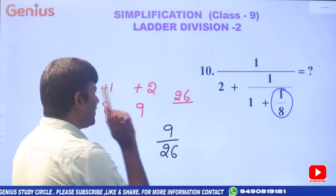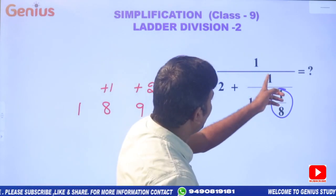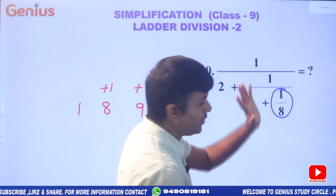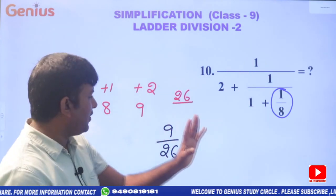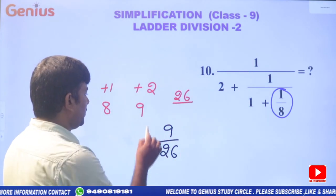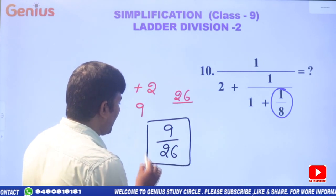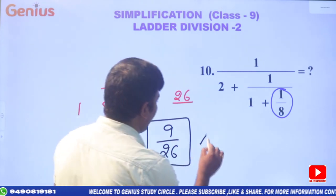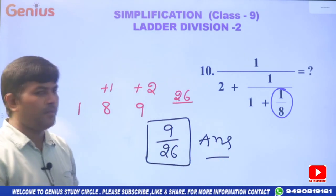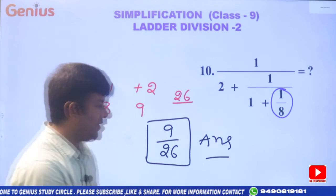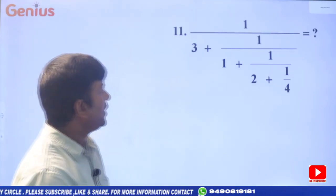We have all of these to divide. Because we have 1 here, 1 here, and 1 here, there is no further division to do. So finally, our problem answer is 9 by 26. Now, problem number 11.